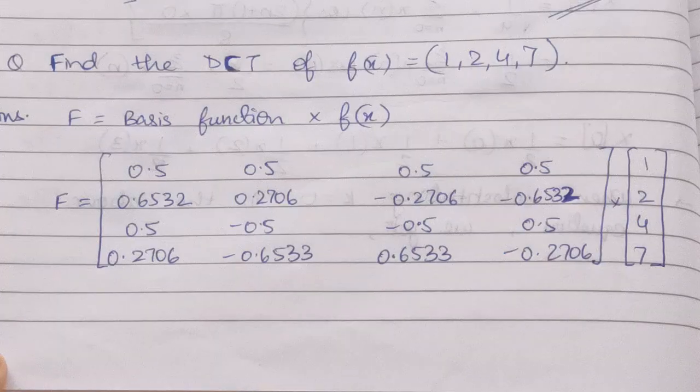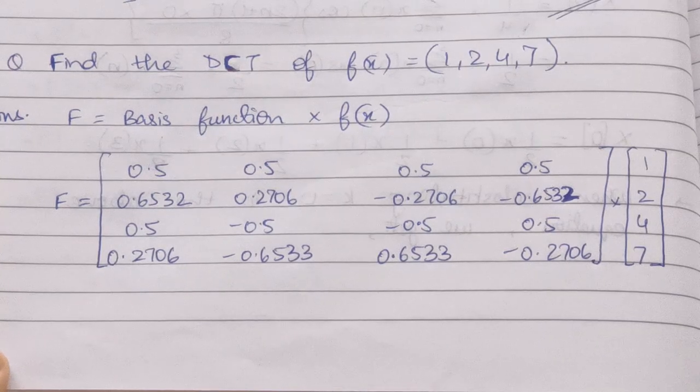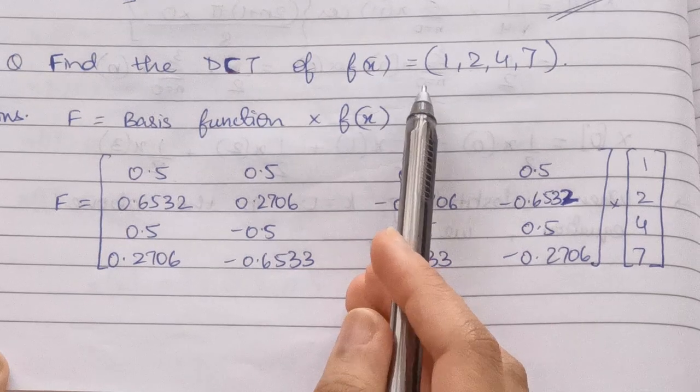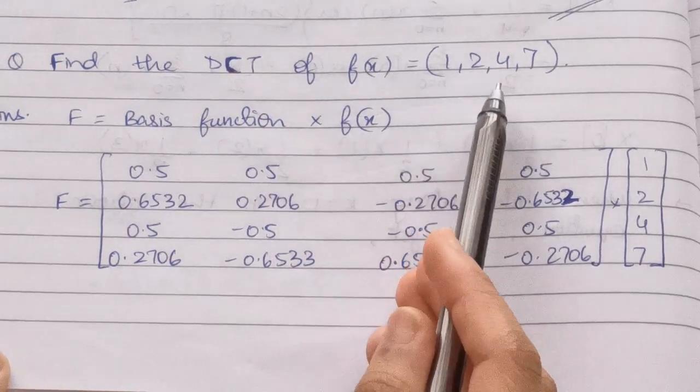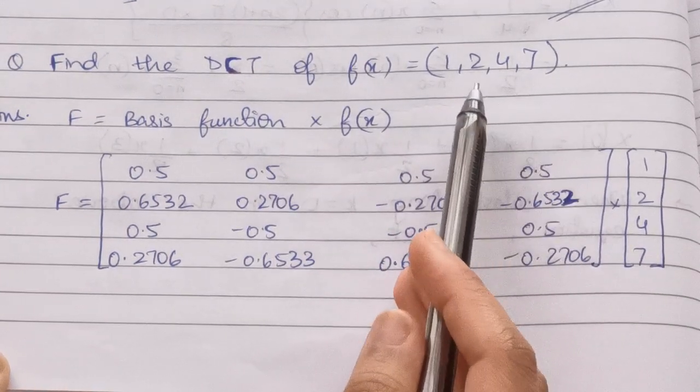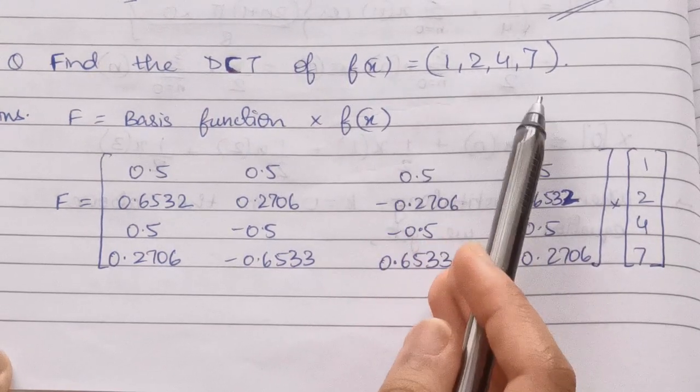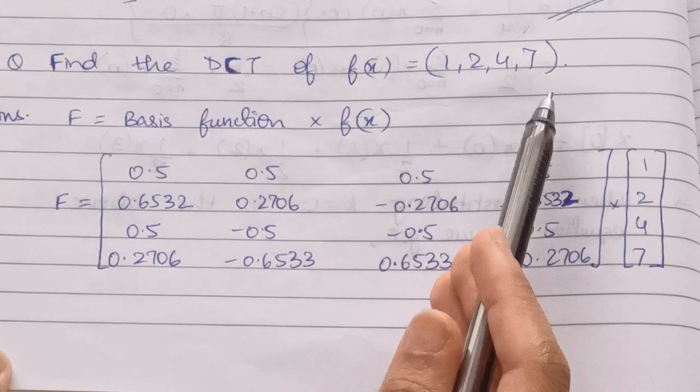We have a question here: Find the DCT of f(x) = [1, 2, 4, 7]. This is a one-dimensional sequence.